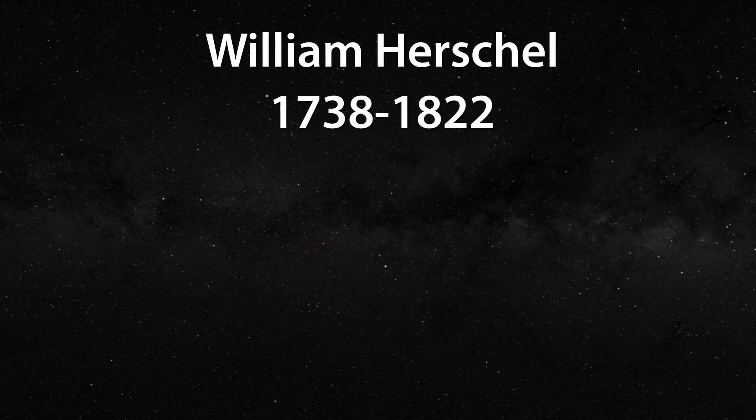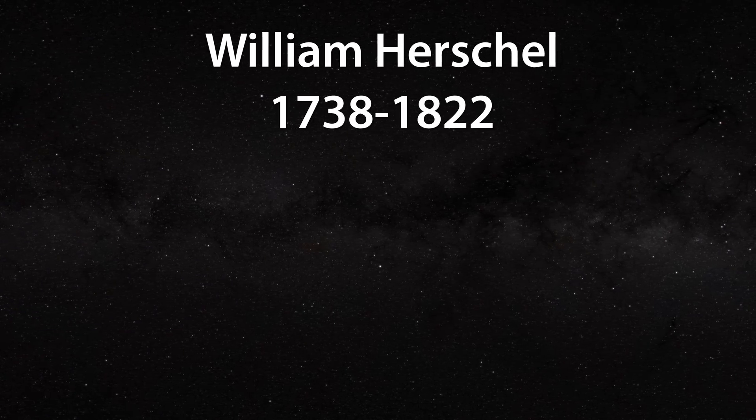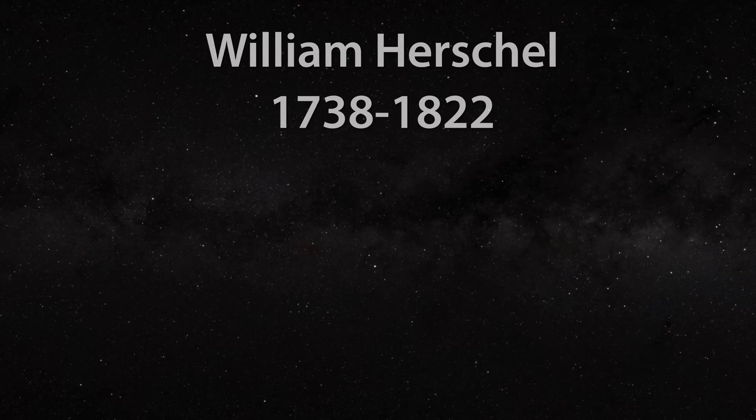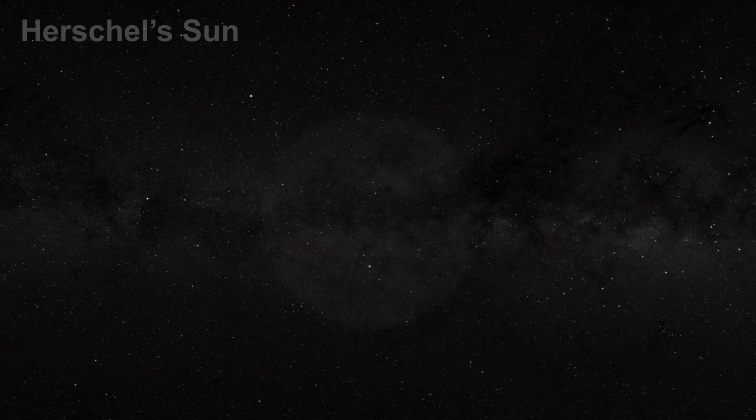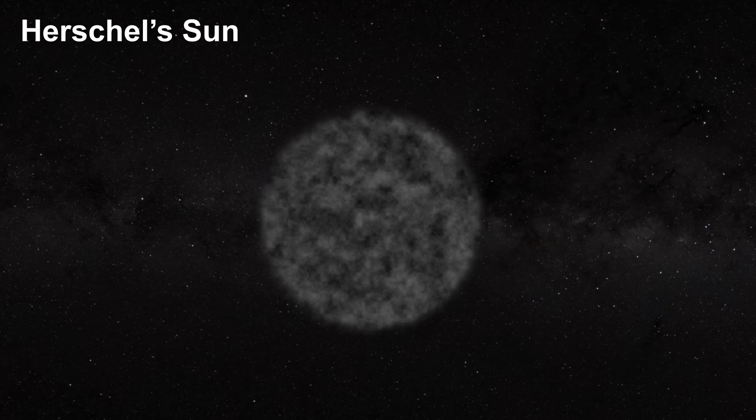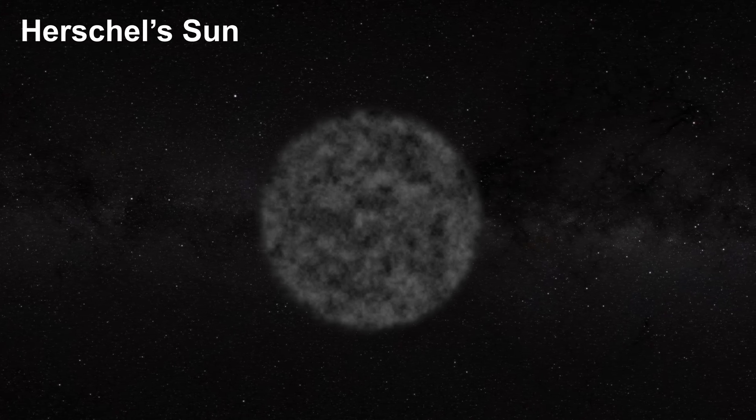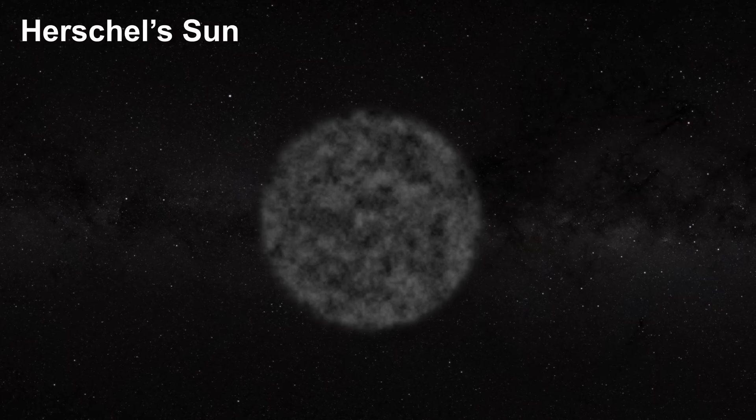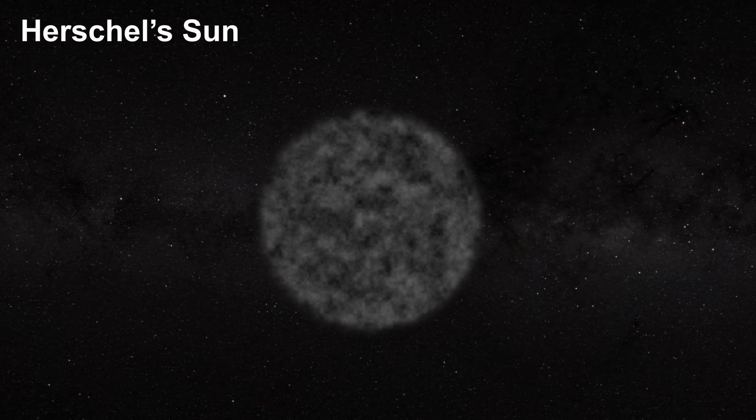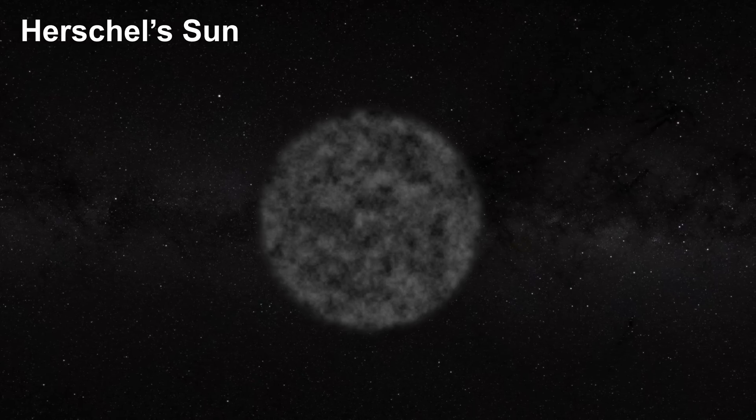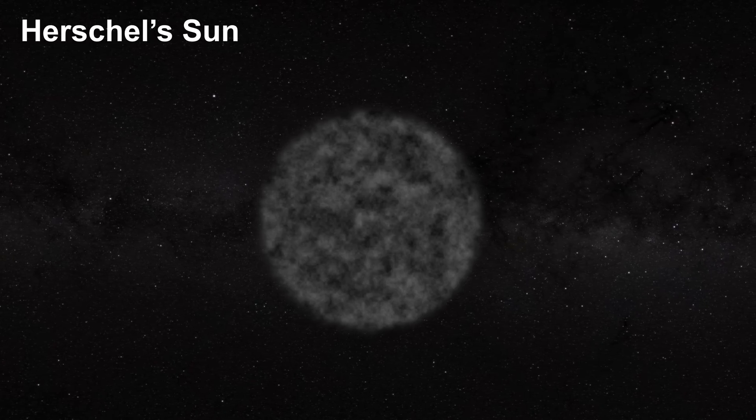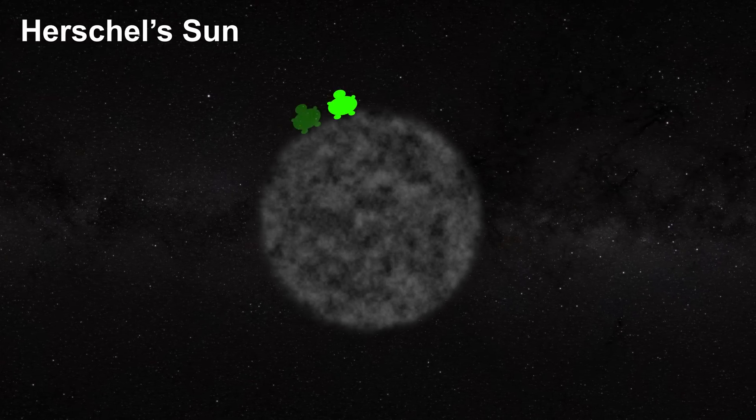Let's start with William Herschel at the beginning of the 19th century. Herschel believed that the sun was an inhabited solid object. He was a careful observer who made many important discoveries. You can tell he loved the stars since he built more than 400 telescopes himself. He also had a vivid imagination.